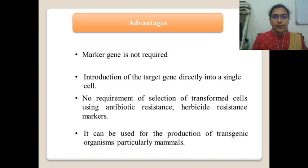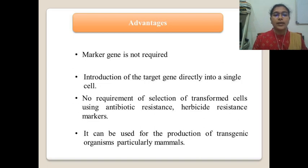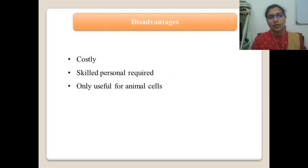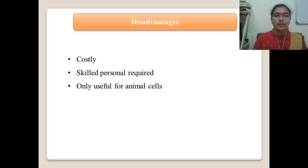Now, what are the advantages of this method? A marker gene is not required. The target gene is introduced directly into a single cell. There is no requirement for selection of a transformed cell using antibiotic resistance or herbicide resistant markers. It can be used for the production of transgenic organisms, particularly mammals. However, it has some disadvantages: it is costlier, it needs a skilled person, and it is useful only in animal cells.